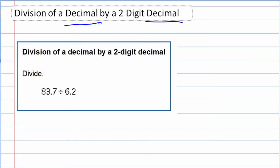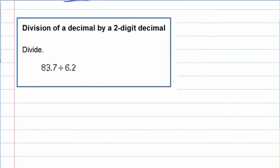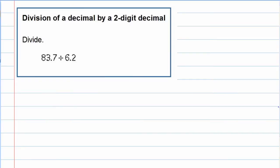And we talked in an earlier video about how we're gonna want to rewrite this as long division. Which means we're gonna have to switch the order. 6.2 goes into 83.7.